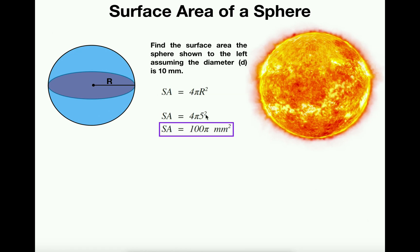5² is 25 times 4 is 100π. And it's going to have units of square millimeters or millimeters squared. And again, the units are squared because it's a surface area. Area is always square units. Volume is always cubic units.